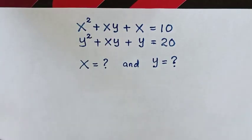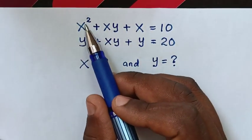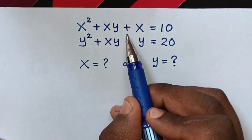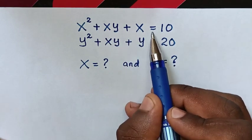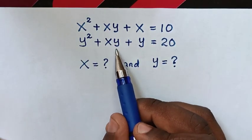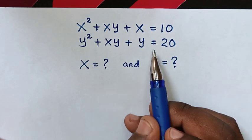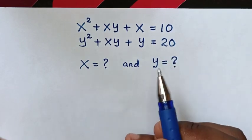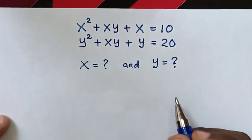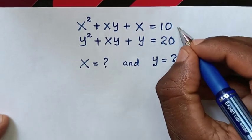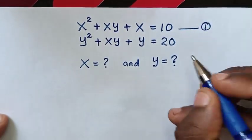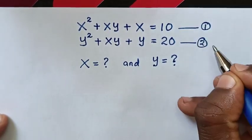How to solve this system of equations: x squared plus xy plus x is equal to 10, and y squared plus xy plus y is equal to 20, to find the value of x and y. We let this equation 1 and this equation 2.